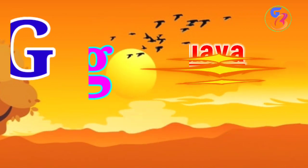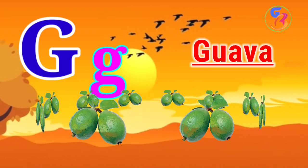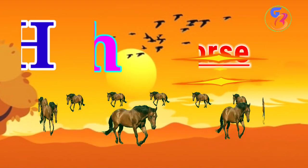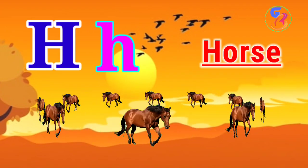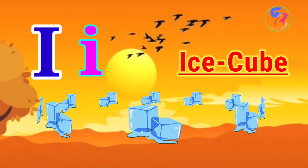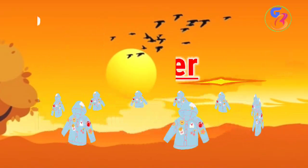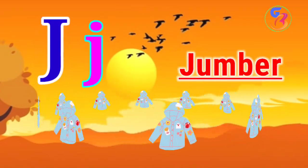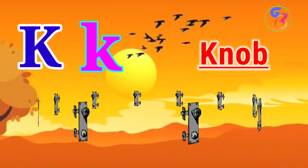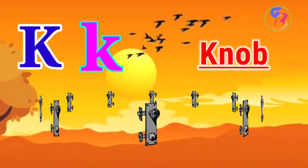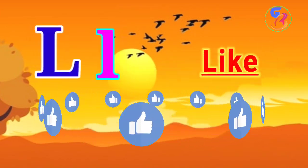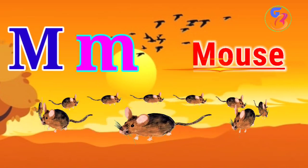G for guava. H for horse. I for ice cube. J for jam jar. K for knob. L for light. M for mouse.